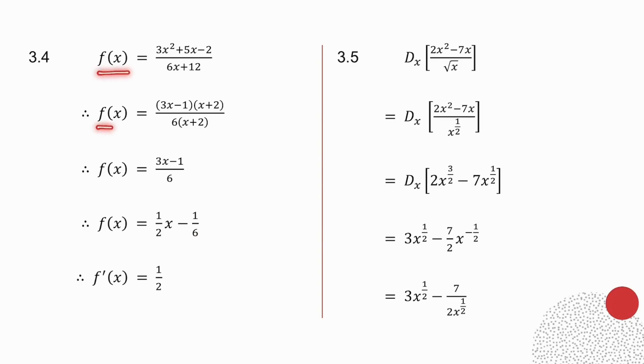I factorized, I cancel, I divided. So this is still equal to f of x. I now take the derivative, and because I gave you f of x, the notation for the derivative is f dash x. Derivative of a half x is a half. Derivative of minus 1 sixth is 0.